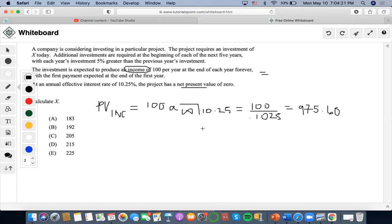Now, the next one is that we want to find the present value of the investment. The project requires an investment of X today. X today and additional investments are required for each of the next five years with 5% greater than the other.